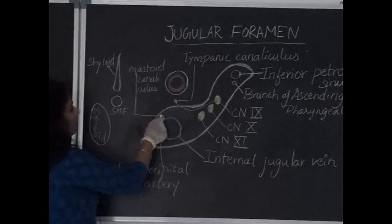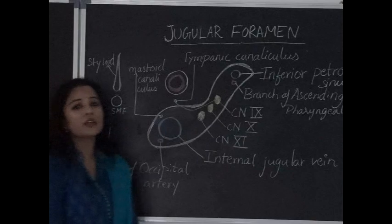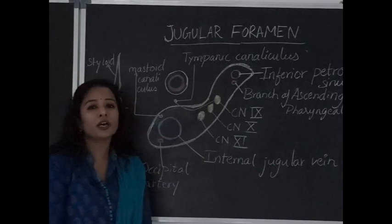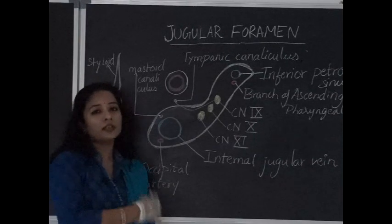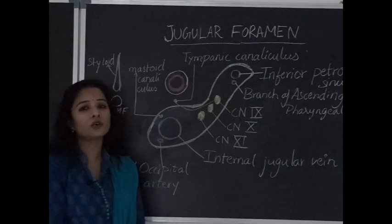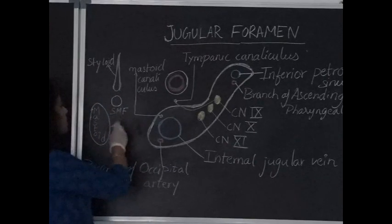And this foramen transmits a nerve which is called as Arnold's nerve which is also called as auricular branch of vagus. And initially at birth this nerve is running extracranial course later due to the development of mastoid process and the tympanic part of temporal bone it becomes intracranial.